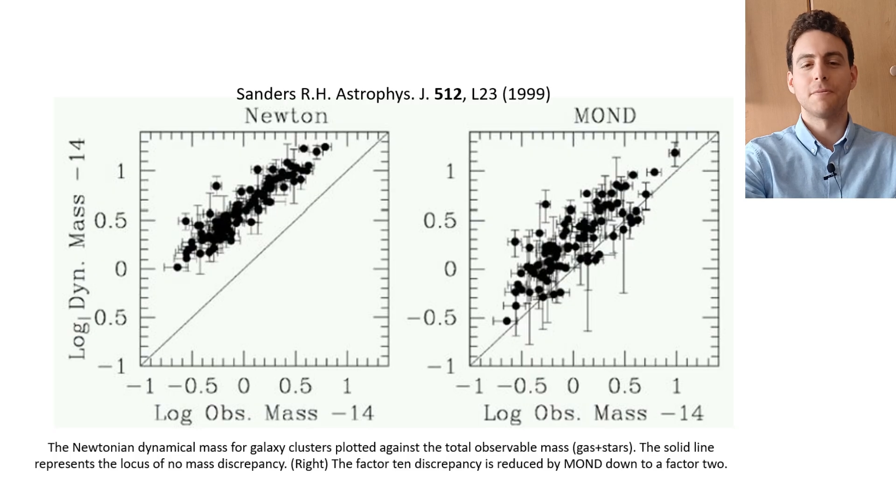But perhaps the most well-known criticism against MOND is that it falls short to explain the velocities or mass discrepancies found in galaxy cluster dynamics.